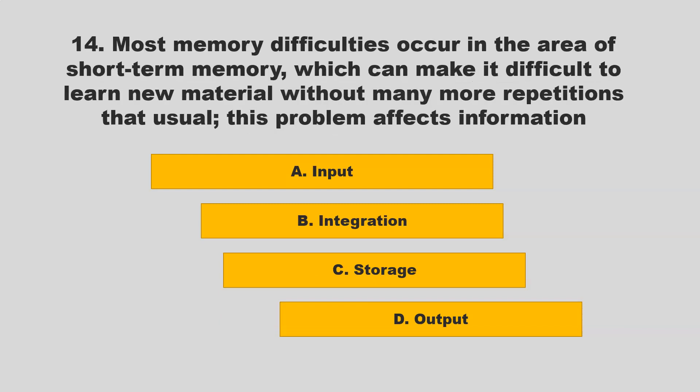Most memory difficulties occur in the area of short-term memory, which can make it difficult to learn new material without many more repetitions than usual. This problem affects information: A) input; B) integration; C) storage; D) output. If you chose C — storage — you are correct.